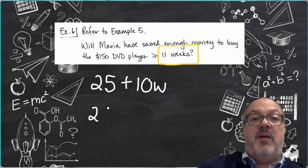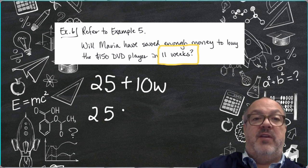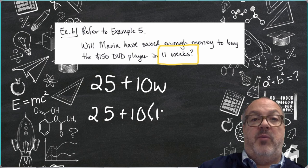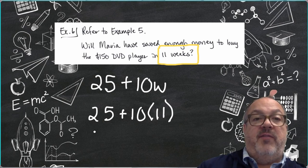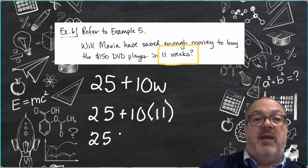So I'm going to substitute 11 for my variable w, which is going to be the number of weeks. So I'm going to have 25 plus 10 times 11, which is $110.